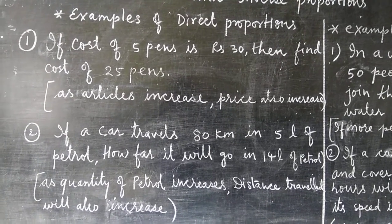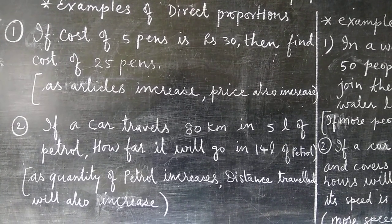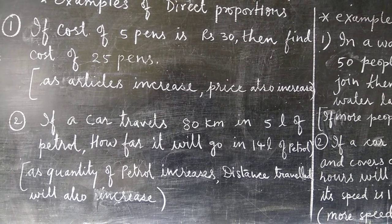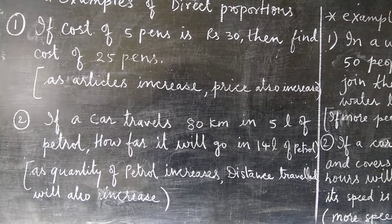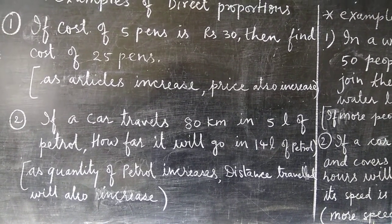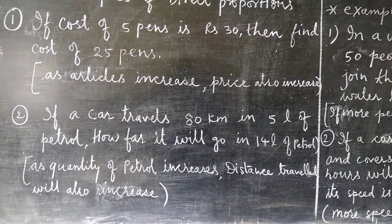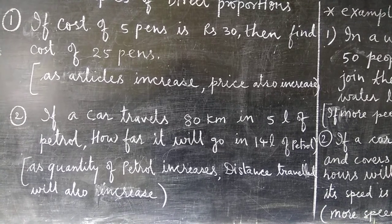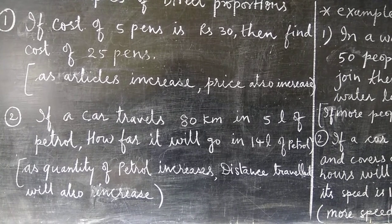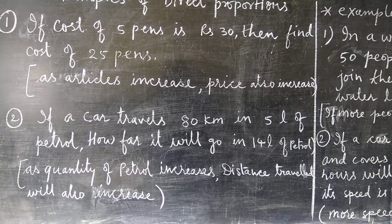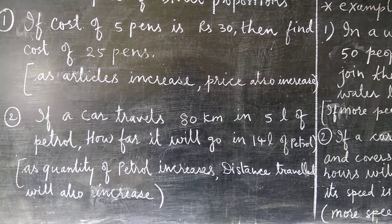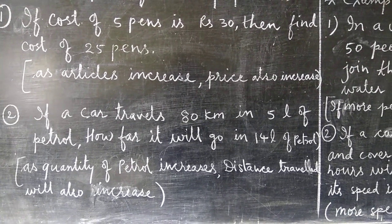The second example: if a car travels 80 km in 5 litres of petrol, how far will it go in 14 litres of petrol? The distance covered is 80 km in 5 litres. If we fill 14 litres, the car will go more than 80 km. If you fill less petrol, the car will cover less distance. So more petrol means more distance, and less petrol means less distance.